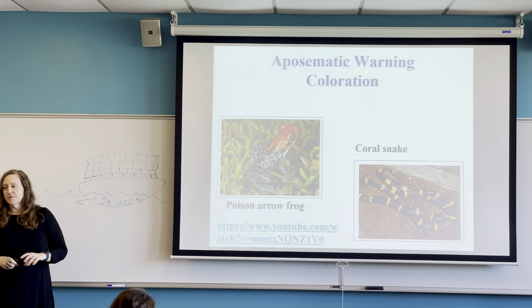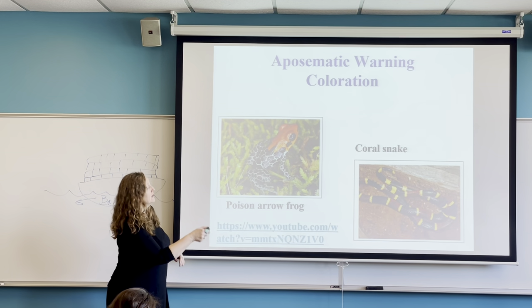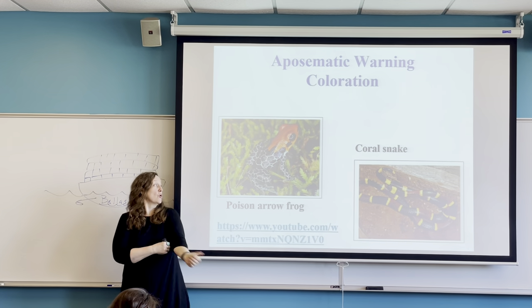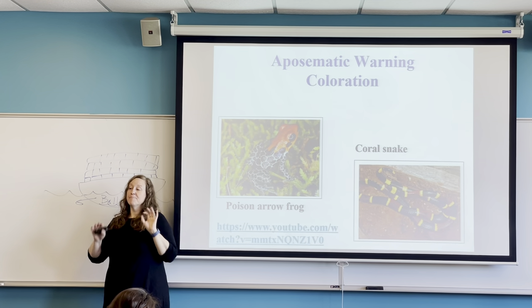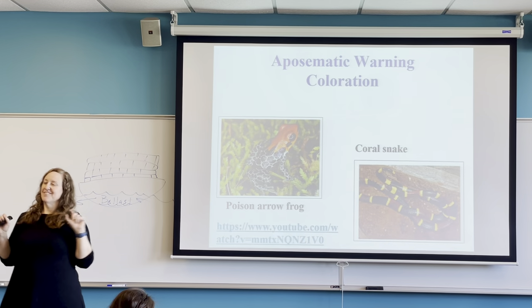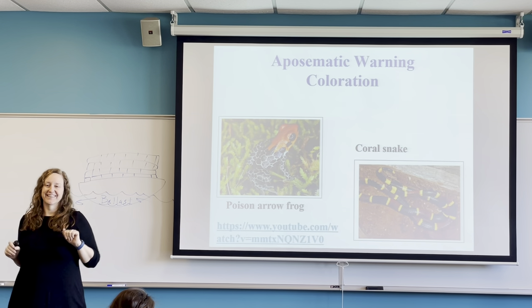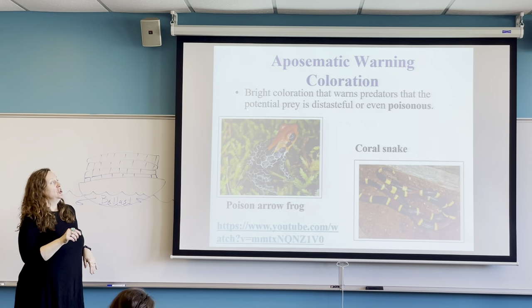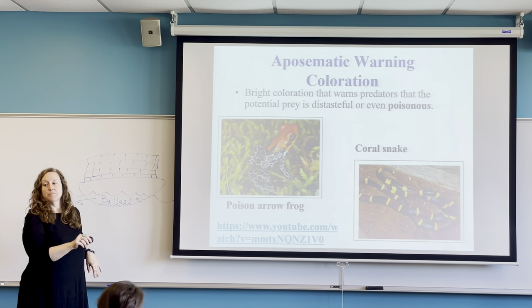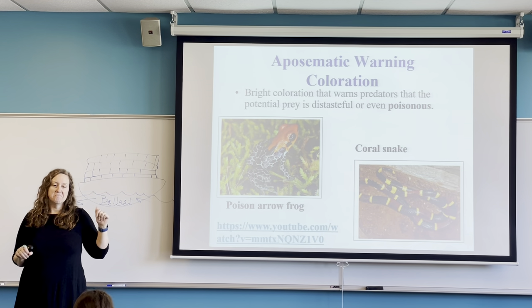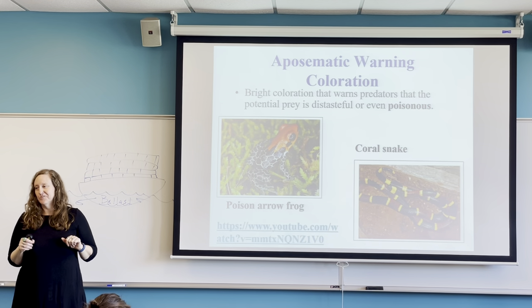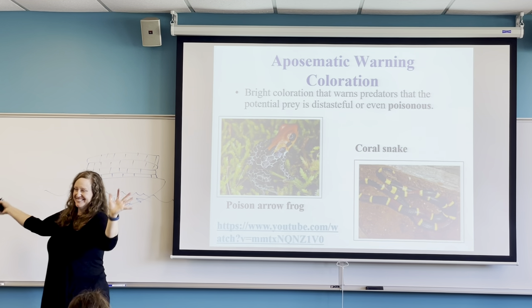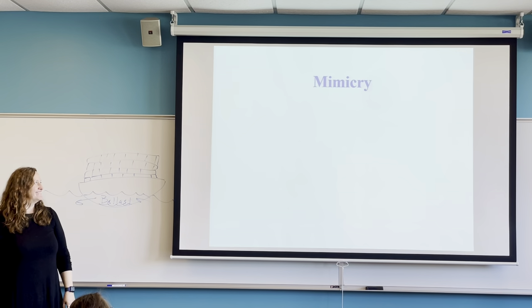Aposematic coloration — warning coloration — means being brightly colored to signal you're poisonous. If you're this poison dart frog, you can hop around the rainforest and nobody's going to eat you. The same with this brightly colored snake. It almost seems counterintuitive that you're advertising your presence, but the message is: don't eat me, I'm poisonous, you'll suffer if you try.